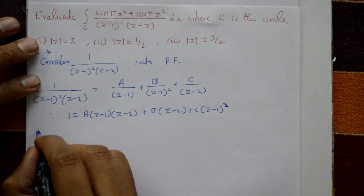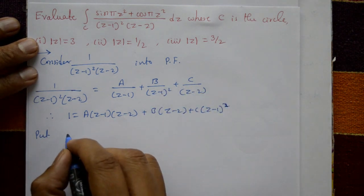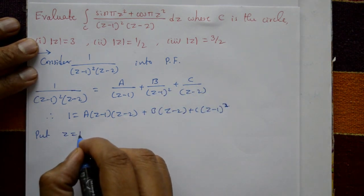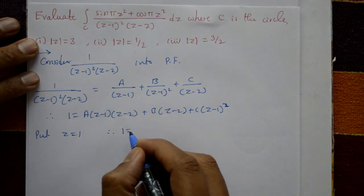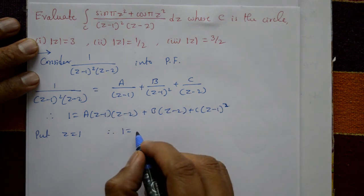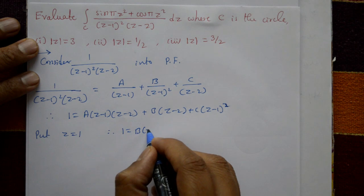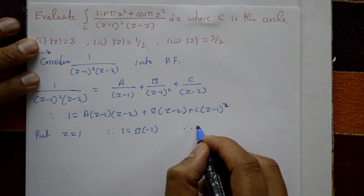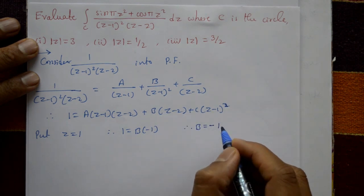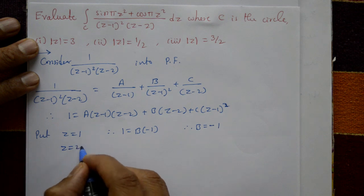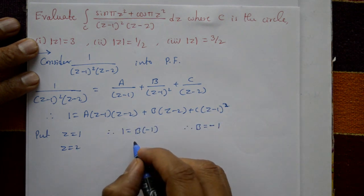Put z = 1: we get 1 = B(1-2) = B(-1), therefore B = -1. Next, put z = 2 to find C.